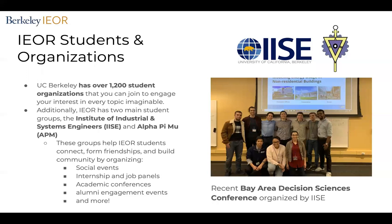Berkeley has more than 1,200 student organizations, and IEOR has two main student groups. The first one is RISE, the Institute of Industrial and Systems Engineering, and we also have an honor society, APIMU. From the department chair's point of view, it has really been fun to work with them because they help arrange many fun activities. They are really engaged, and I really appreciate all their help. They help the department plan social events, assist with internship and job panels, organize academic conferences, and contact former students from the department so that alumni can come back and share their working experience. I really encourage you to look at these two student societies and join them as soon as possible.